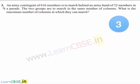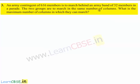Now let us move on to the third question. An army contingent of 616 members is to march behind an army band of 32 members in a parade. The two groups are to march in the same number of columns. What is the maximum number of columns in which they can march? Let us move on to the solution.